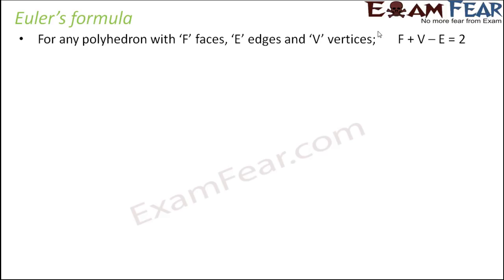So Euler's formula says that for any polyhedron with F faces, E edges and V vertices, that is we assume that the number of faces is F, number of edges is E and number of vertices is V, then this relation will always hold true. That is F plus V minus E is equal to 2.